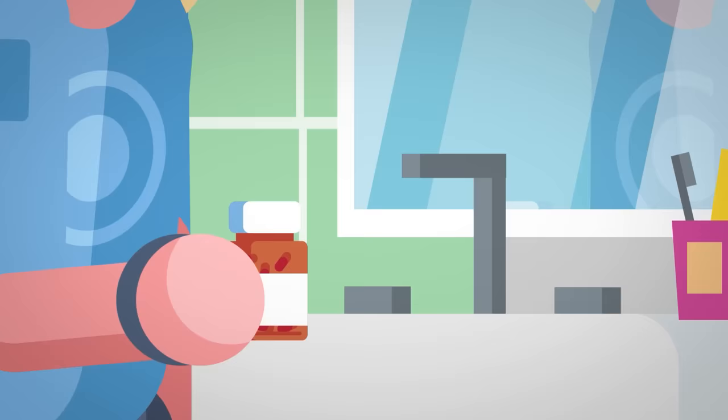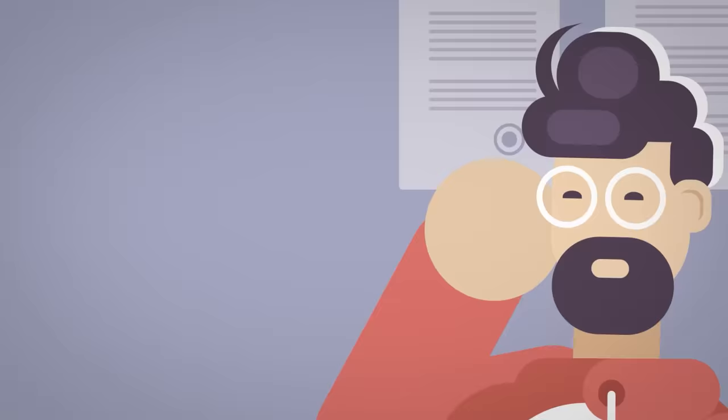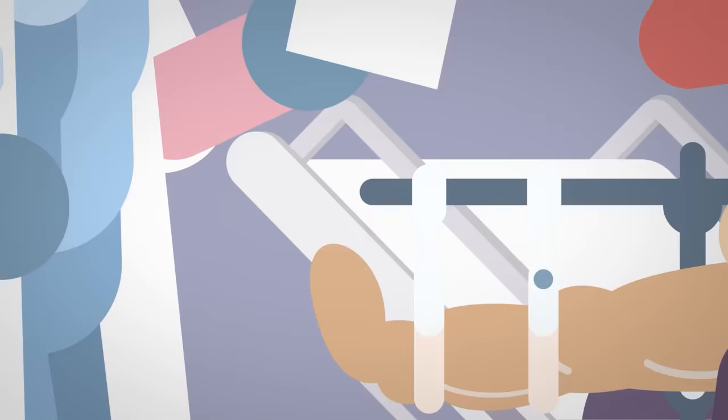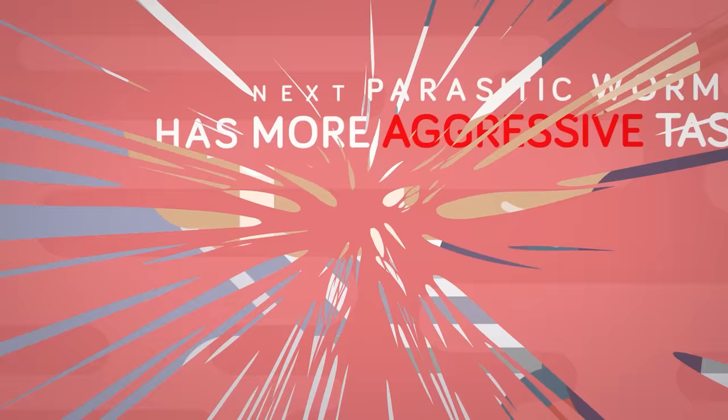They are one of the world's leading causes of blindness, and in severe cases can cause elephantiasis syndrome, a disorder that causes extreme swelling due to the inability of the lymph glands to drain, mostly affecting the legs. The next parasitic worm has more aggressive tastes.